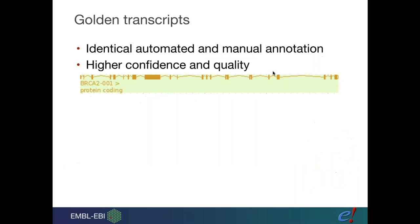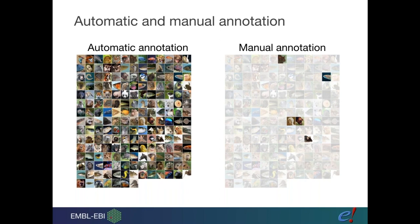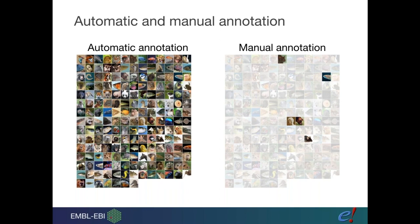The gold transcripts represent identical annotation from both methods we use: automatic and manual annotation. Automatic annotation is performed for every species in the database using a pipeline with real biological data — plotting protein and cDNA sequences onto the genome via sequence matching. A common misconception is that automatic annotation means searching for open reading frames (ab initio prediction); Ensembl does not do this. All our gene predictions are supported by experimental biological data.